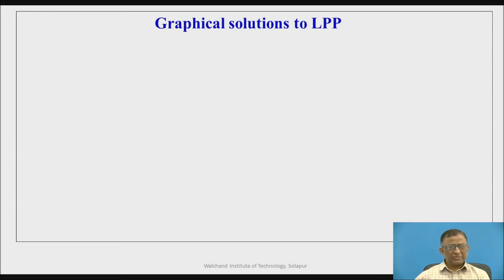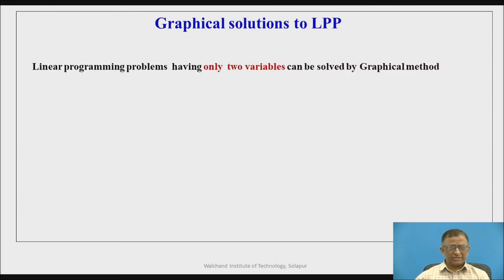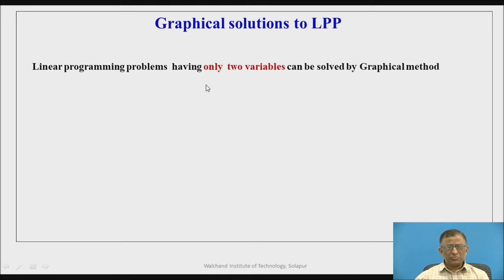Graphical method is one of the simplest methods which can be used to solve the linear programming problem, as compared to other methods like the simplex method, dual simplex method, and two-phase method, which are cumbersome. However, it has the biggest drawback that it can only be used for problems having only two decision variables.